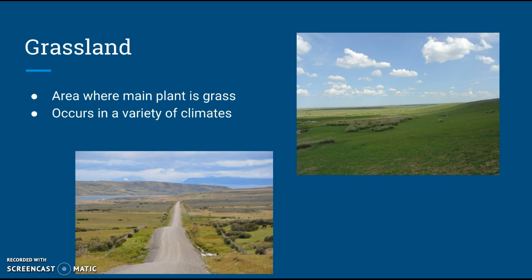Next, we are going to be talking about grassland. Like the name suggests, it's an area where grass is going to be the main plant. This could be in a variety of different environments. If you look to the left, you can picture more of a cattle farmland, so you might think like down south. But there could be a variety of different climates that have the conditions for grass to be the main plant and where trees don't really grow as well.